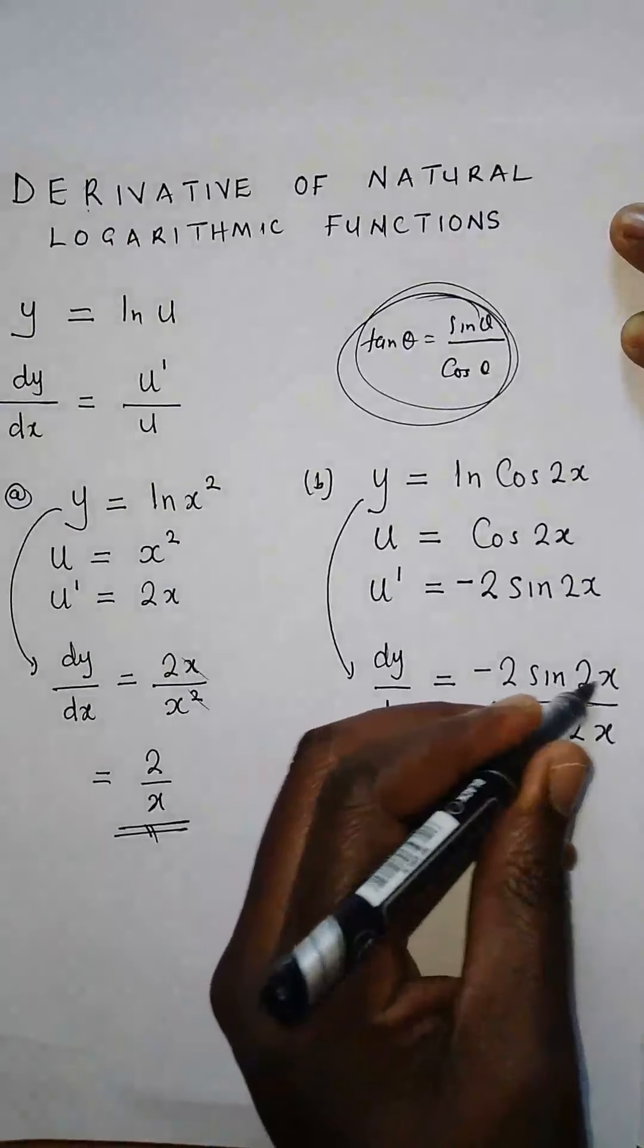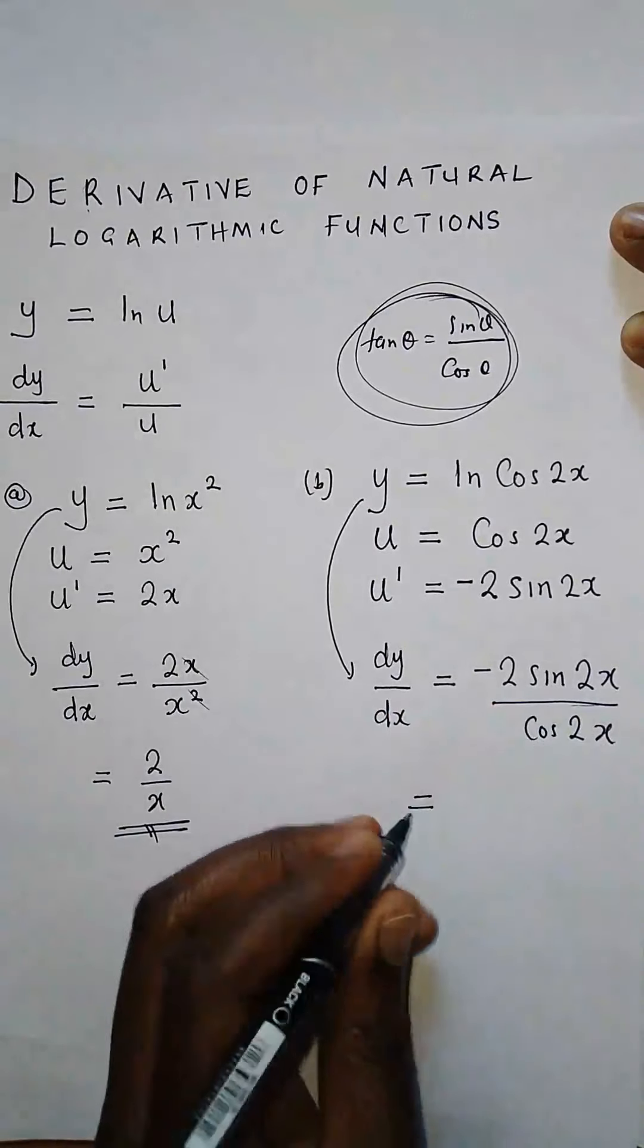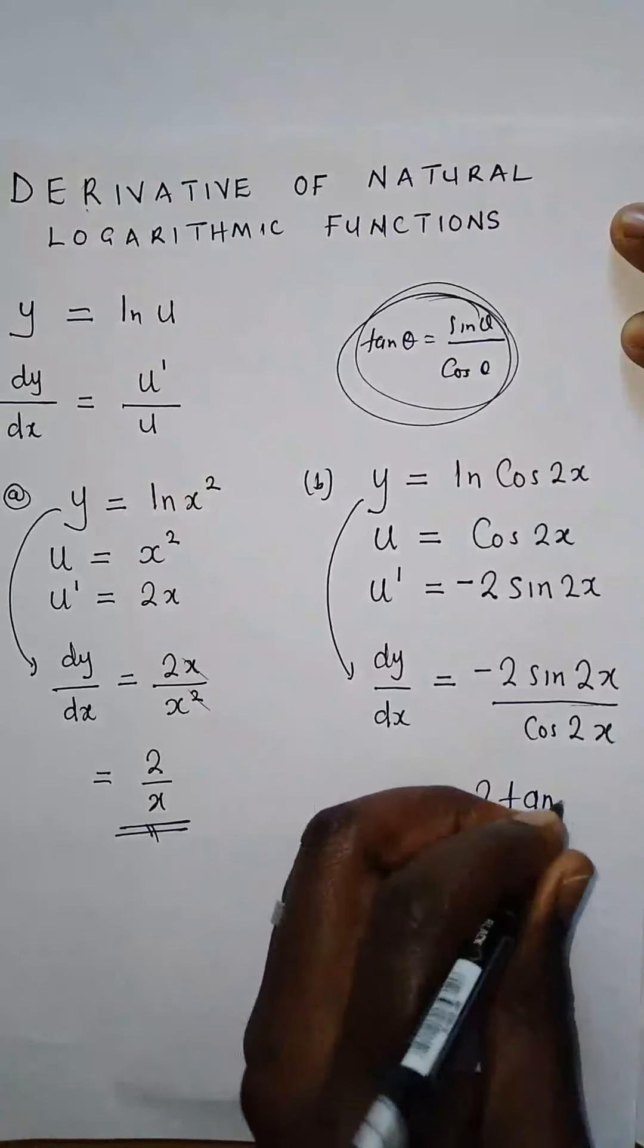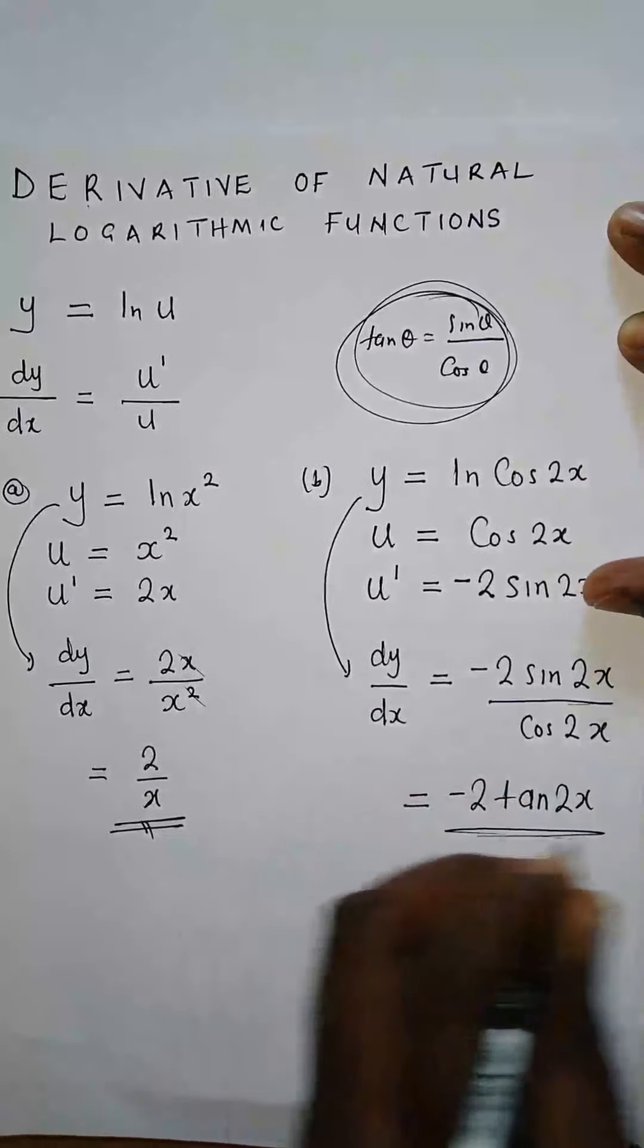We're going to say sine 2x over cos 2x is just tan 2x. So that is our answer.